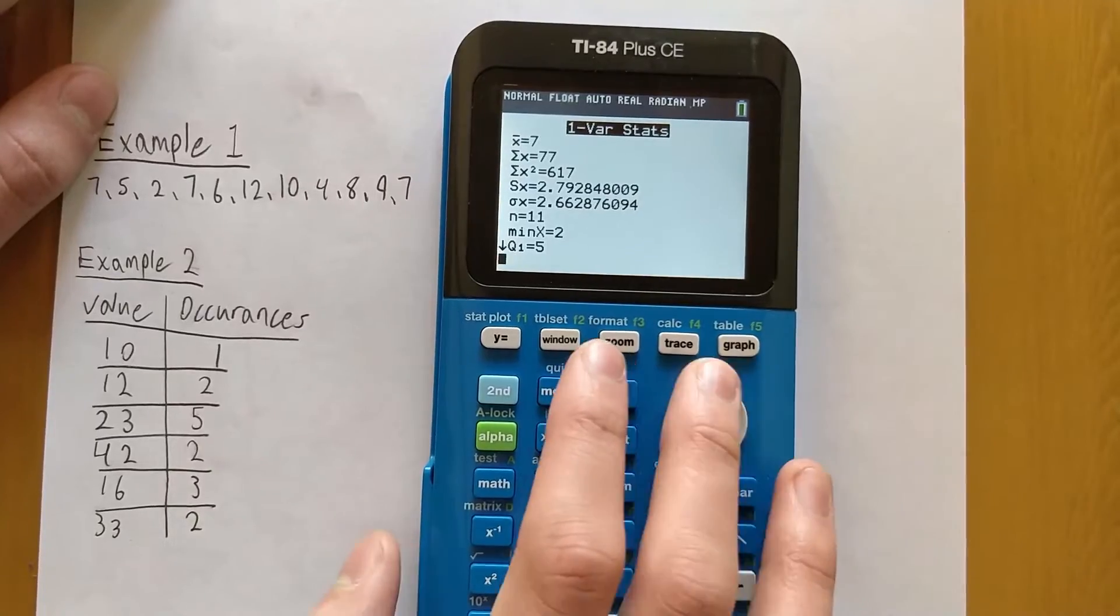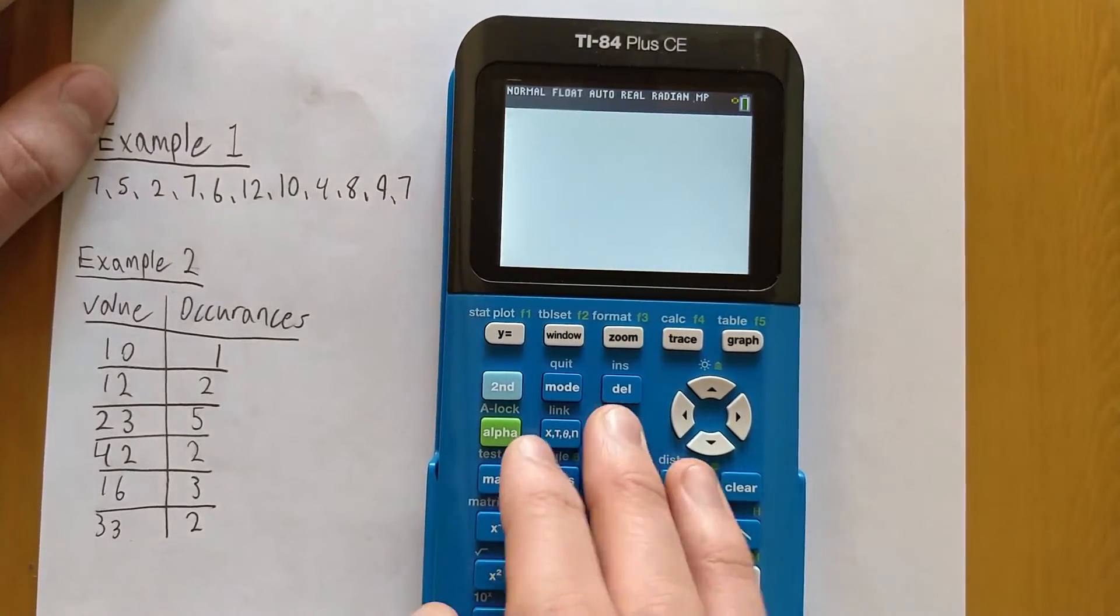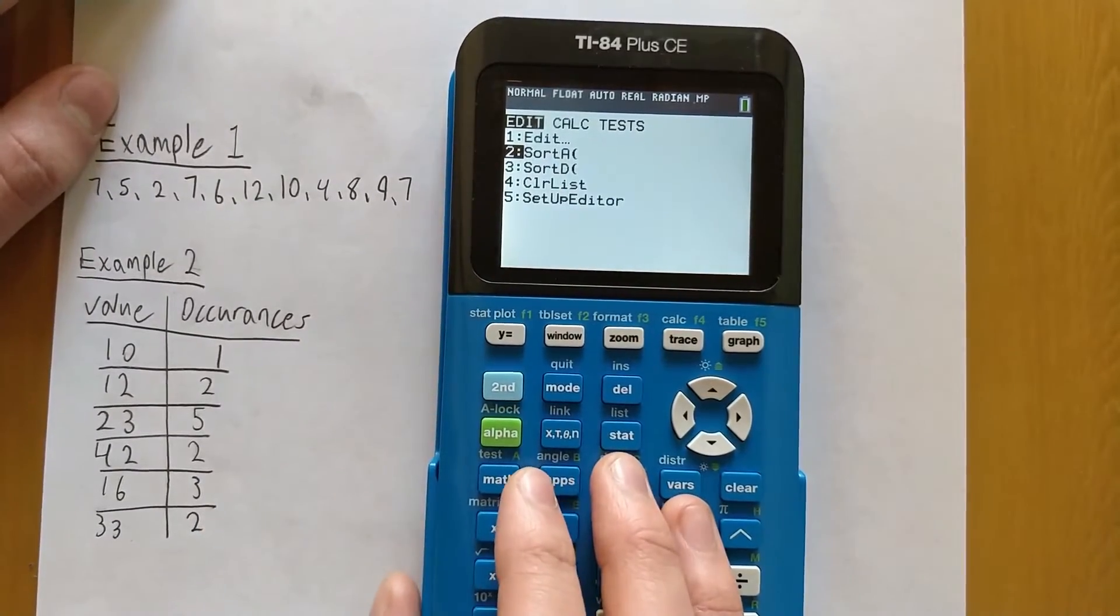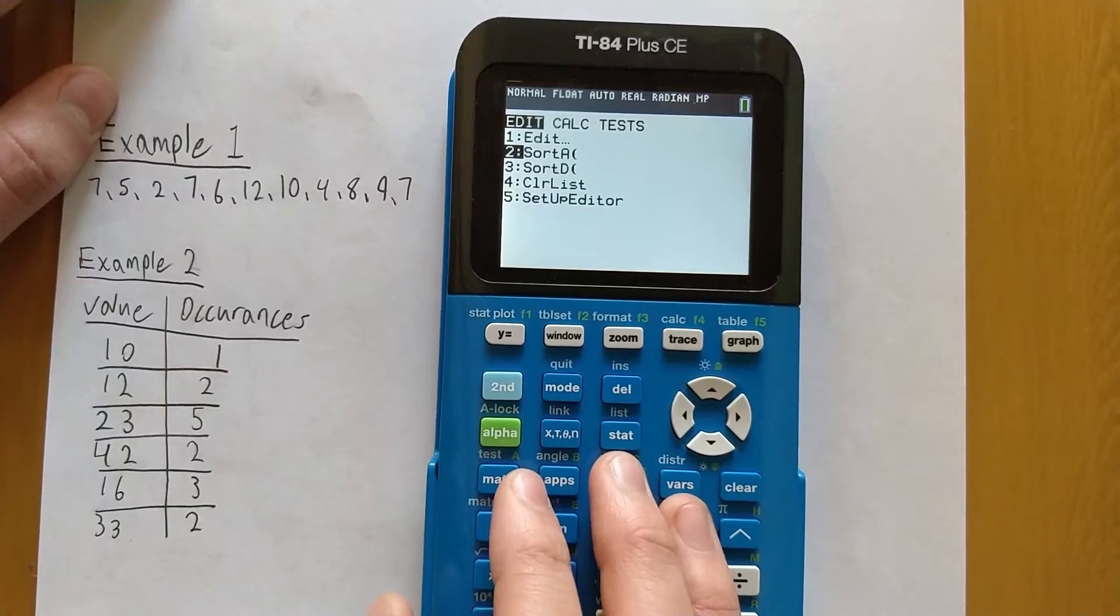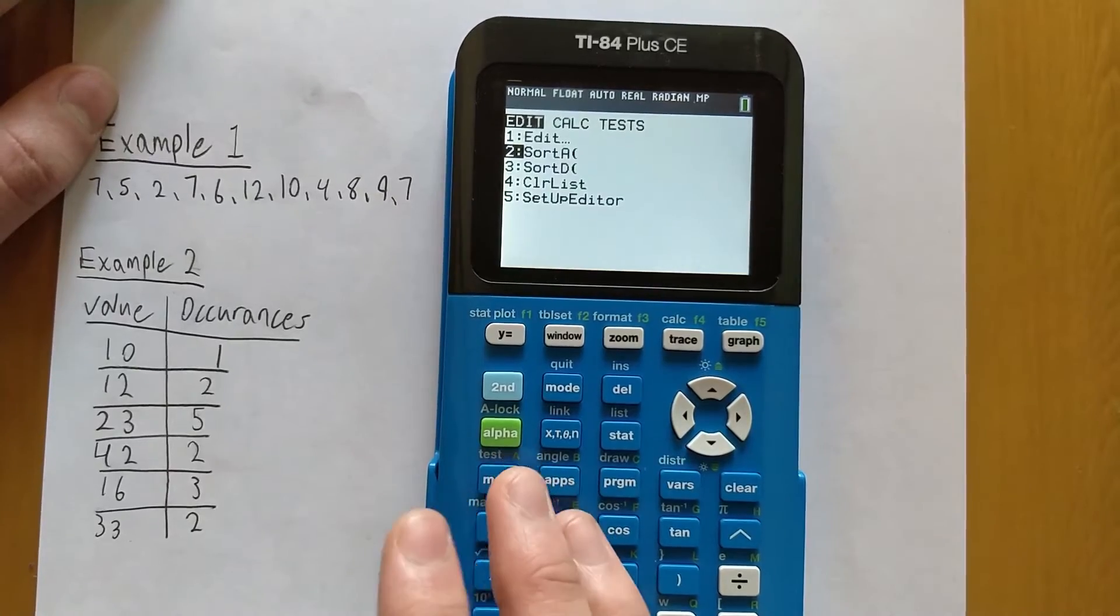As you can see, it doesn't actually give us the mode, but we can kind of get around that by going back to STAT. You can see the second option here is Sort Ascending. So basically what we can do is just sort the list in ascending order, and this will make it easier to find numbers that occur several times and make it easier for us to find the mode.